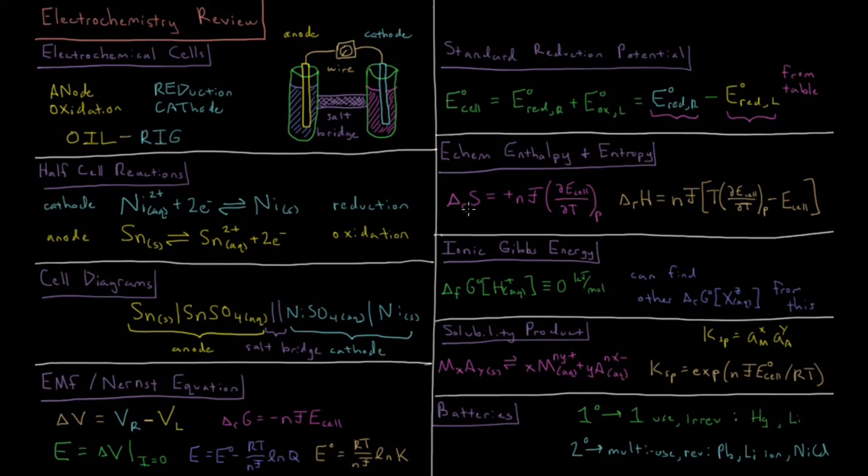From this we know that the enthalpy of reaction is the Gibbs energy plus temperature times entropy change. So the enthalpy change is number of moles transferred of electrons times Faraday's constant times temperature times partial derivative of EMF with respect to temperature minus the EMF of the cell.